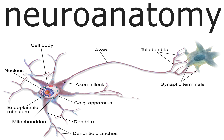This is the 5th episode of the neuroanatomy series. Today we are going to talk about the biology, anatomy, and different features of neuron and neuroglia. Neuron is the basic cell of the nervous system and the neuroglia are the supporting cells of the nervous system.